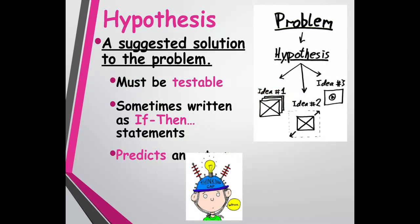Moving forward to the hypothesis. A hypothesis is just a suggested solution to the problem. A hypothesis must be testable — that's the whole point. Sometimes there are really good questions for science, but we don't have a feasible way to test the problem. So a hypothesis has to be testable. Again, they can be written as if-then or if-then-because statements: if I do this, then this will happen because of something. It just predicts the outcome of a question you have.